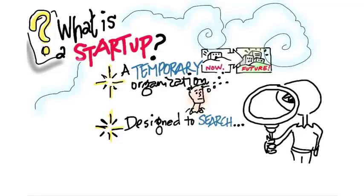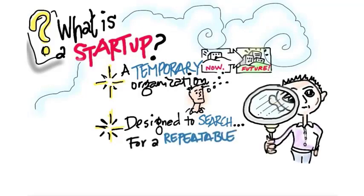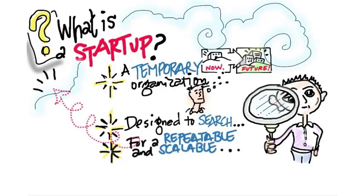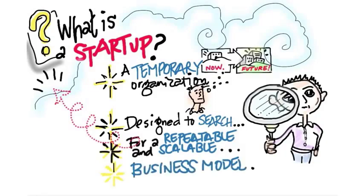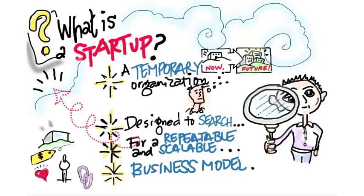What is it that you're supposed to be searching for? Number one, you want something that's repeatable — the same thing that works on Monday works on Wednesday, works on Friday, and works next month. I want sales, marketing, and engineering processes that are repeatable and scalable. Scalable means I put a dollar in and get two or ten dollars out — I shouldn't be losing money continually. What you're searching for is the business model, and that business model search is the basis of the rest of the class.